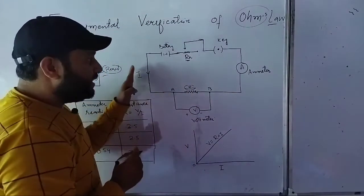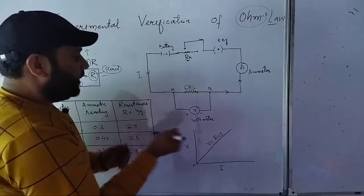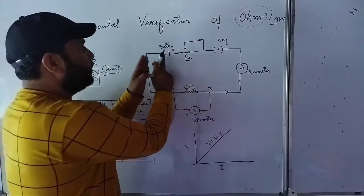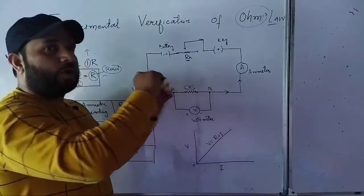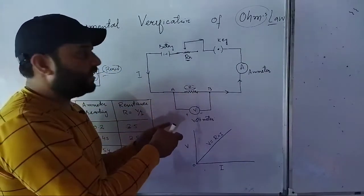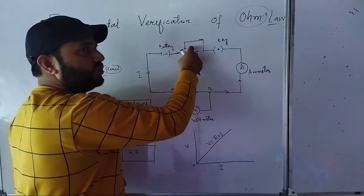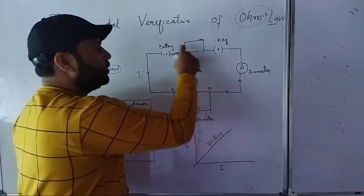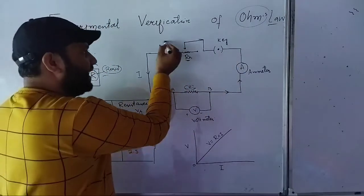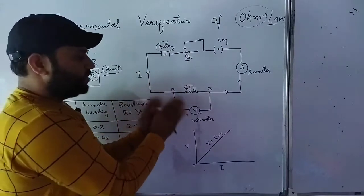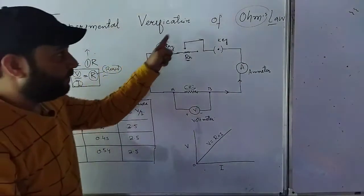When you complete and close the circuit, current flows through it. Now we have to see: if you increase the potential difference - suppose you first put one battery cell and note the current, then replace it with two cells and note the current. You can also change the current by changing the variable resistance. The rheostat's job is that when you change the resistance, there is a change in the current.